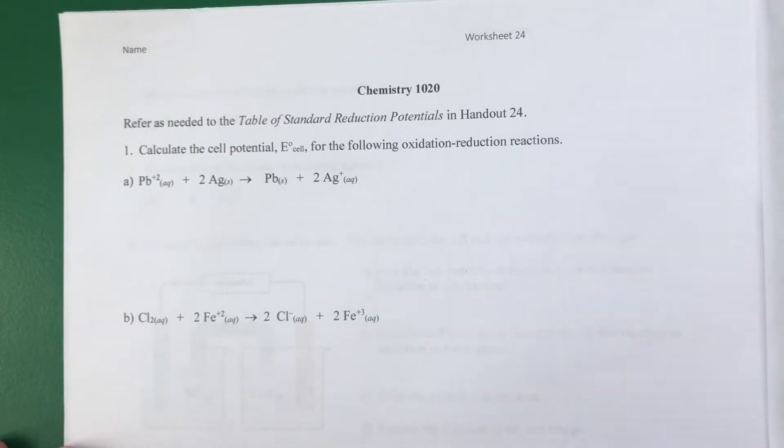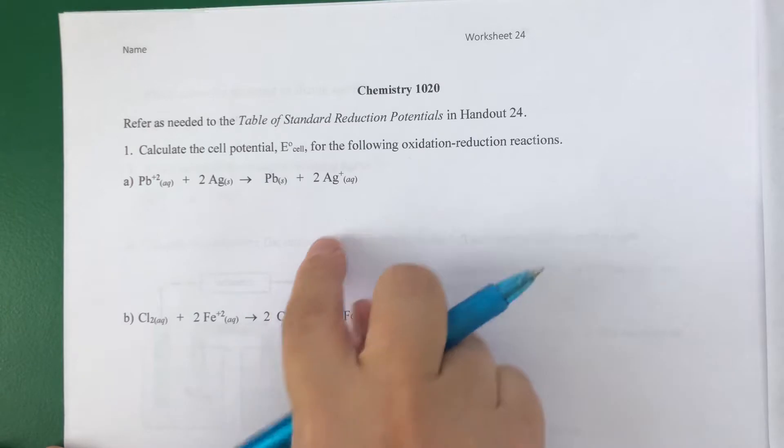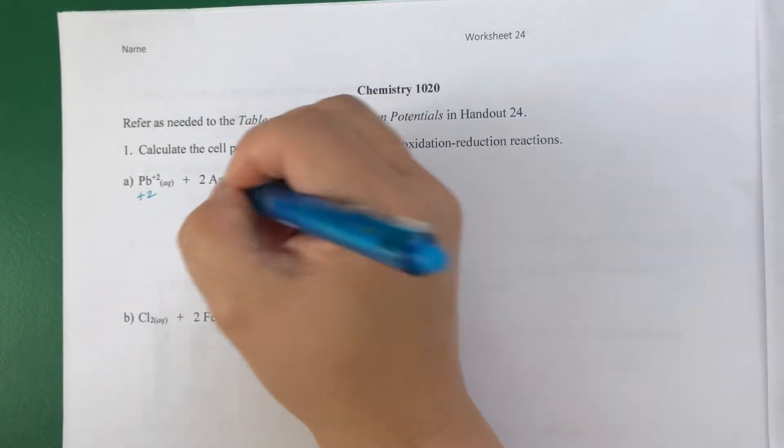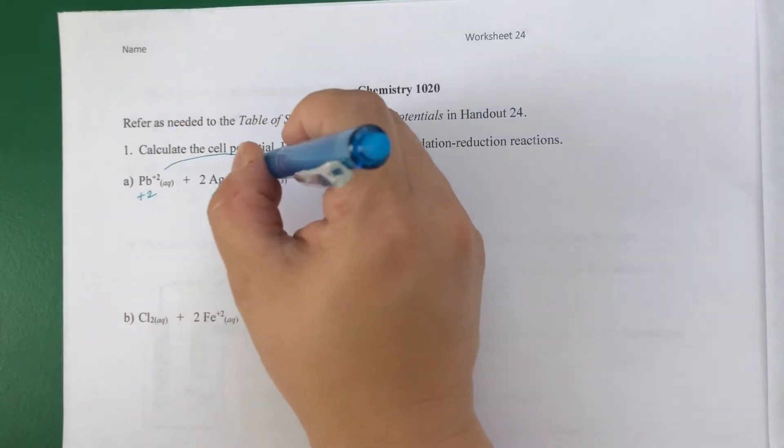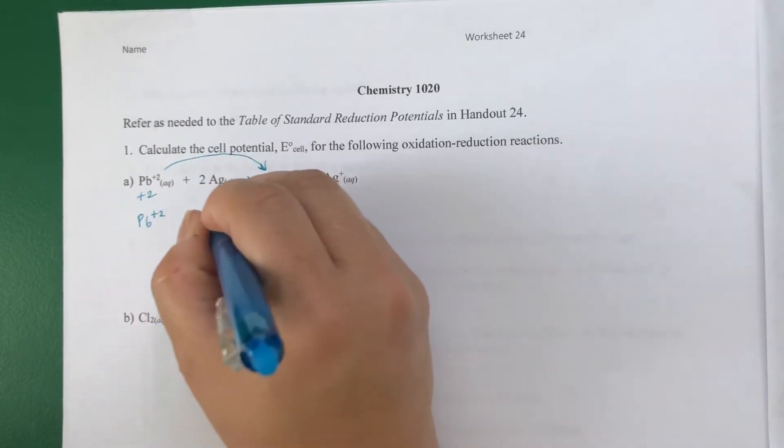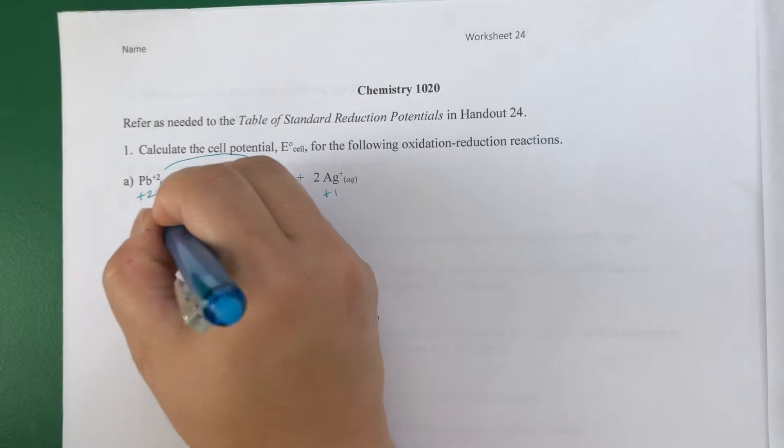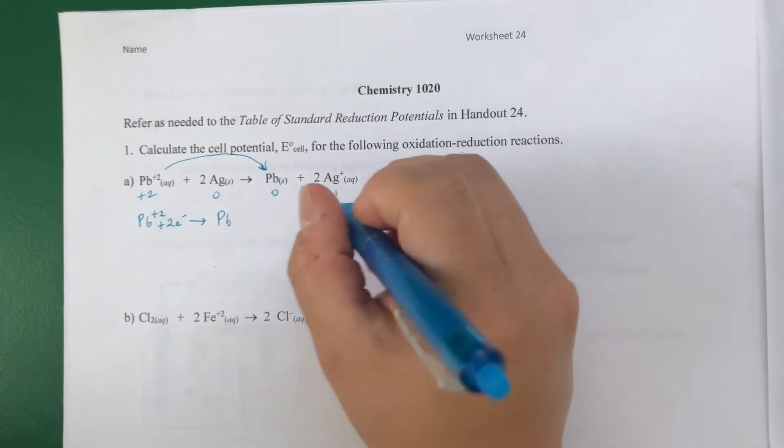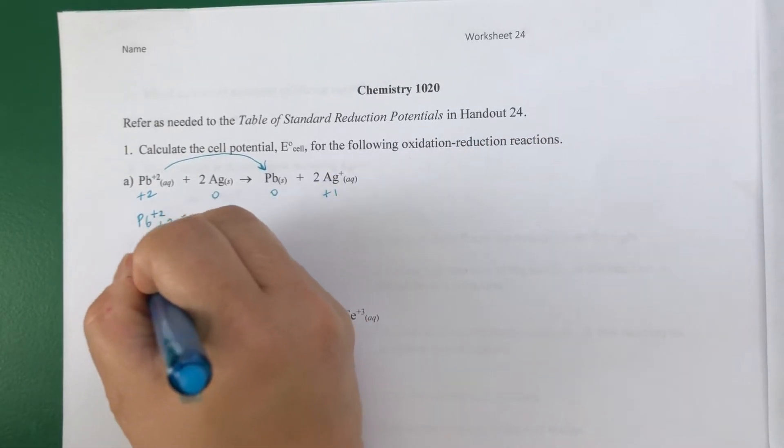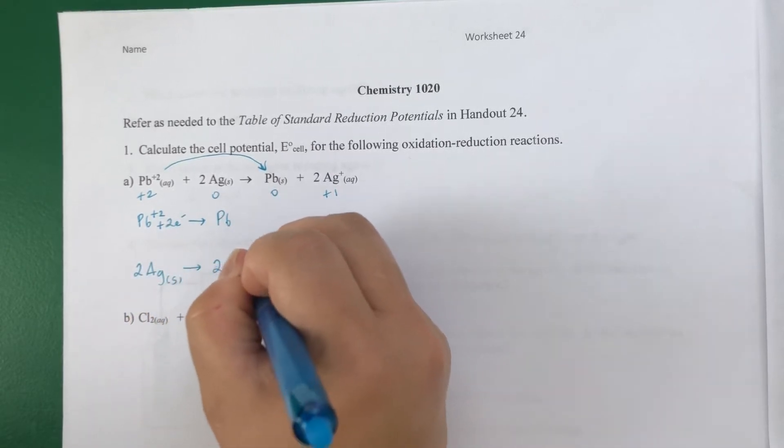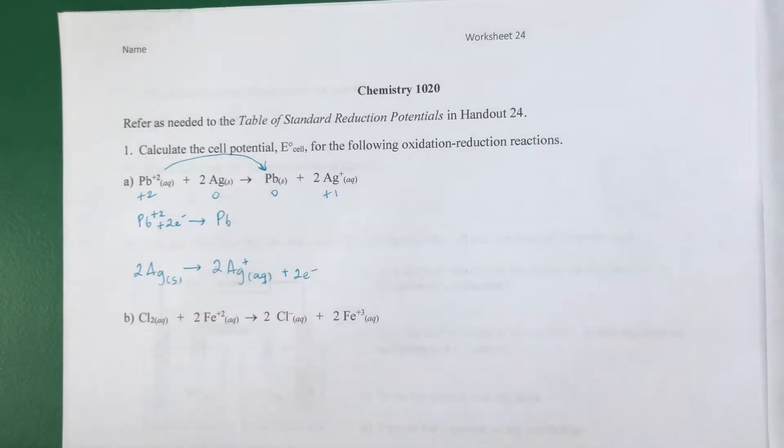Calculate the cell potential for these two redox reactions. I'm going to start by writing the oxidation states: +2, 0, 0, +1. So I'm going to look at Pb²⁺ going to Pb, that uses up two electrons, gains two electrons. And then the other half reaction is two Ag metals, release two Ag⁺ ions, and two electrons.